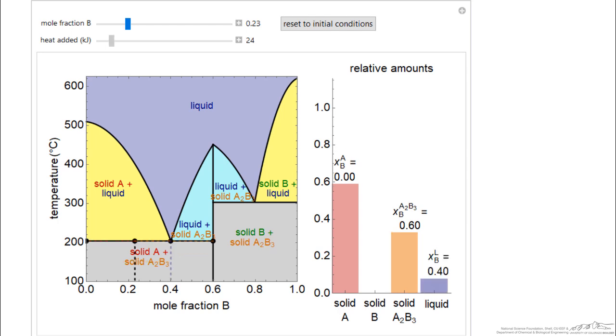I move it back to here, and I start adding heat. I get to this temperature 200 degrees C, and we again have the two solids in equilibrium. As I continue to add heat, the temperature does not change, but we start to form liquid, and the liquid mole fraction is 0.4.